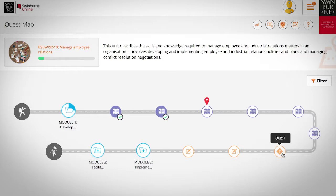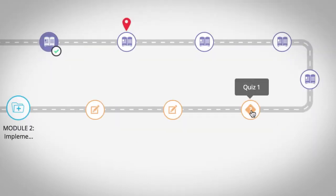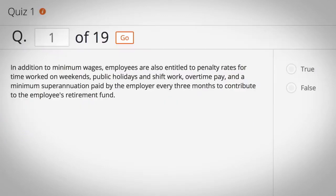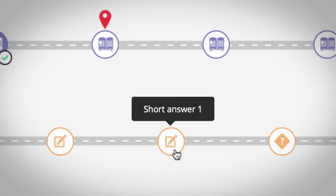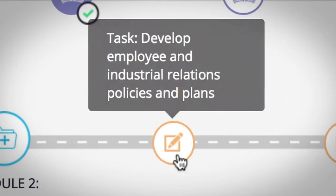You'll read through your content and then come up against a quiz, a short answer, and a task. Start off with your quiz because you're building your knowledge. Then go to your short answer questions and then your task. If you go in order, you'll find you'll progress at a faster rate.